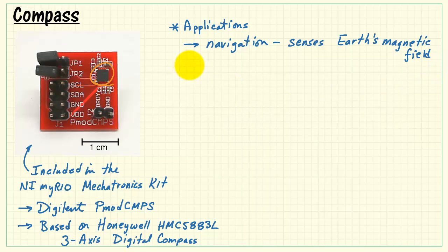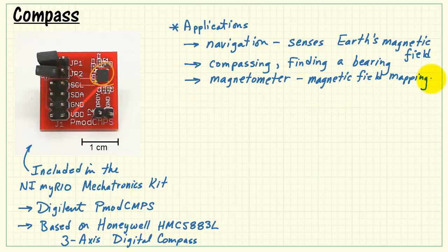Applications for a compass like this include navigation because it senses the Earth's magnetic field. You can use that for traditional compassing and finding a bearing. You can also treat it as a magnetometer that can be used for magnetic field mapping.